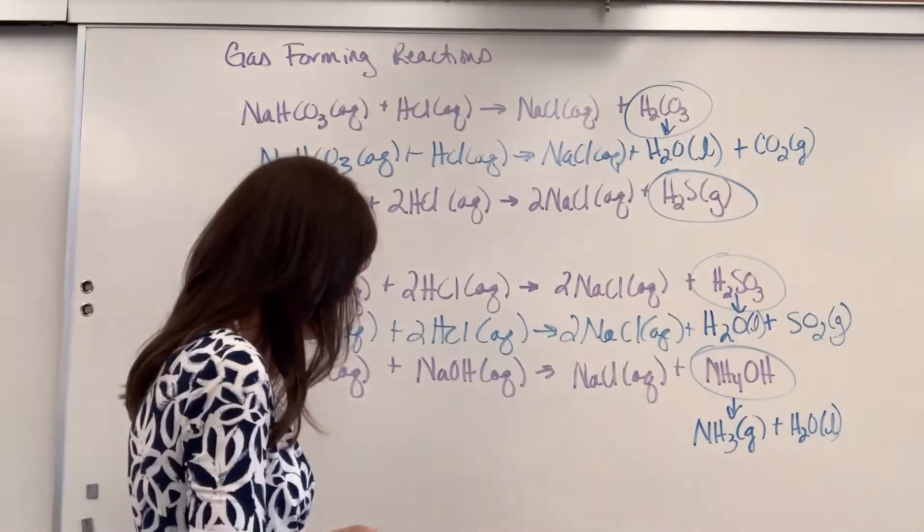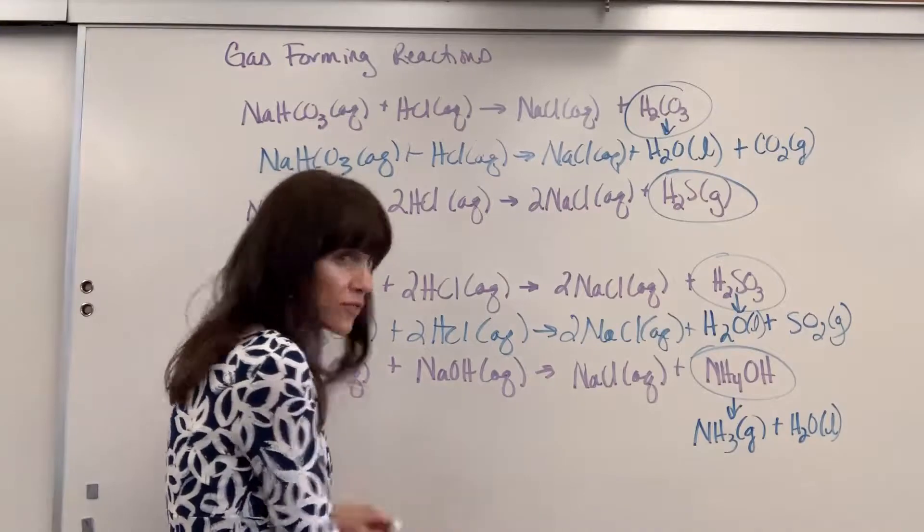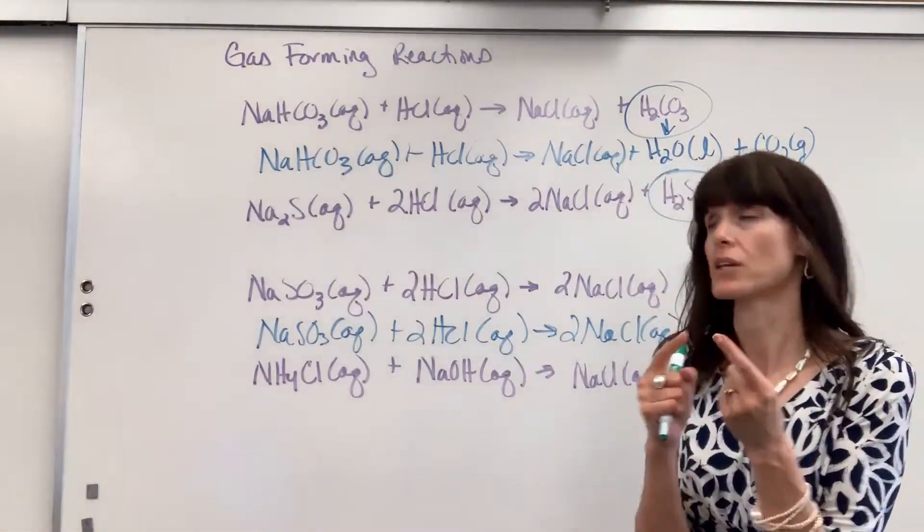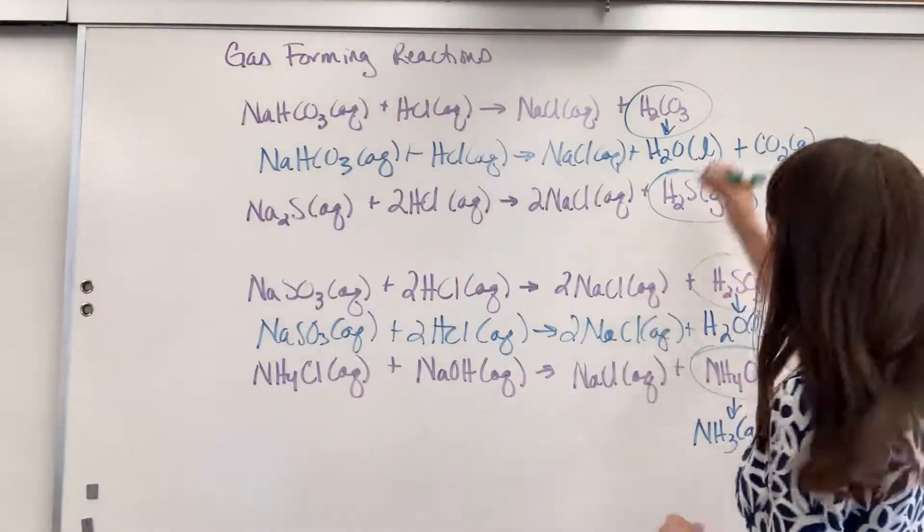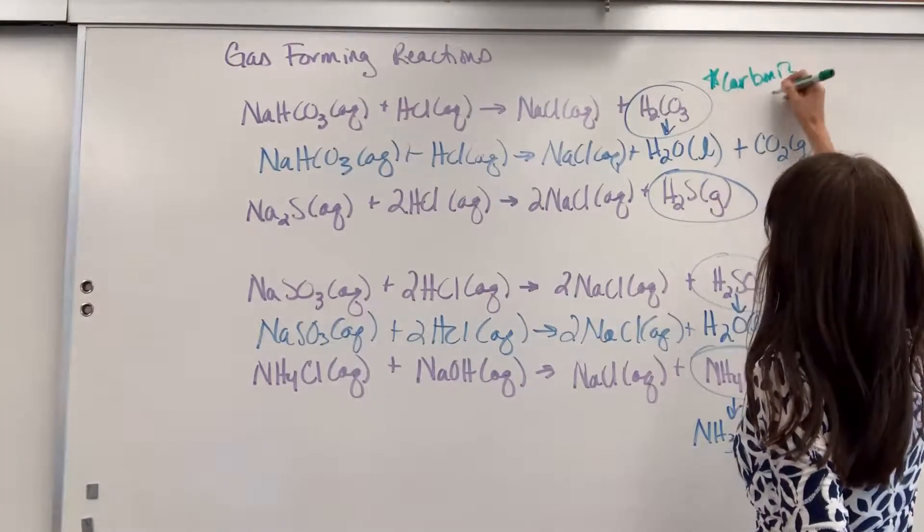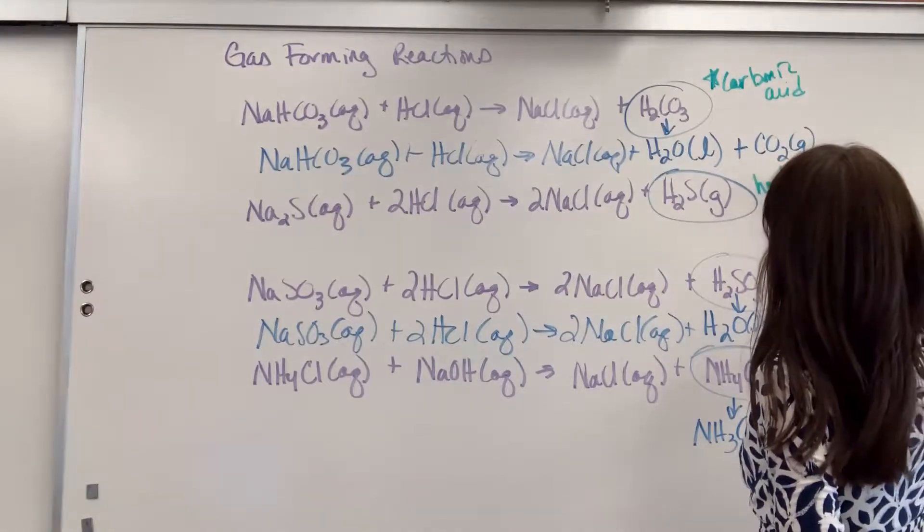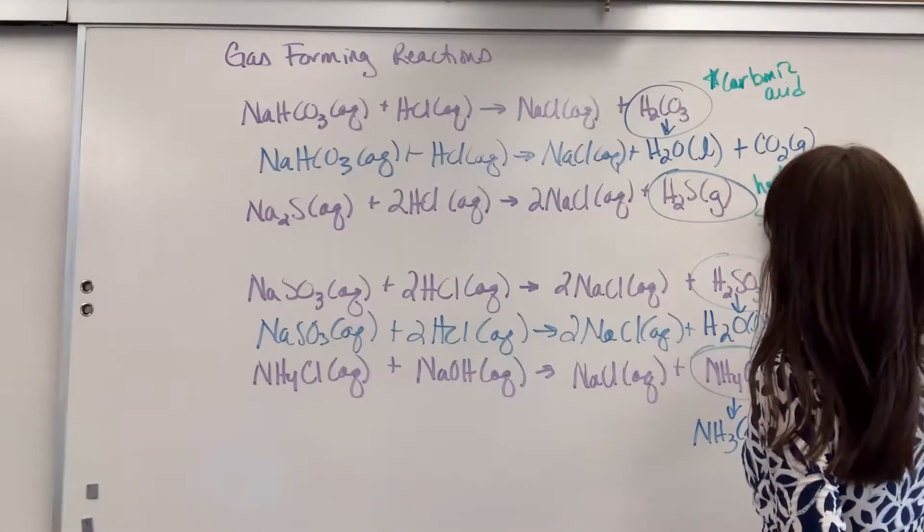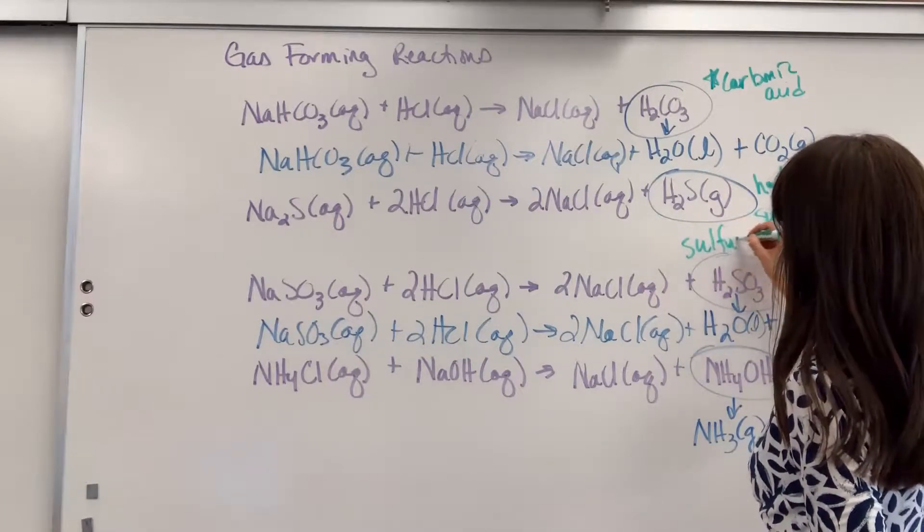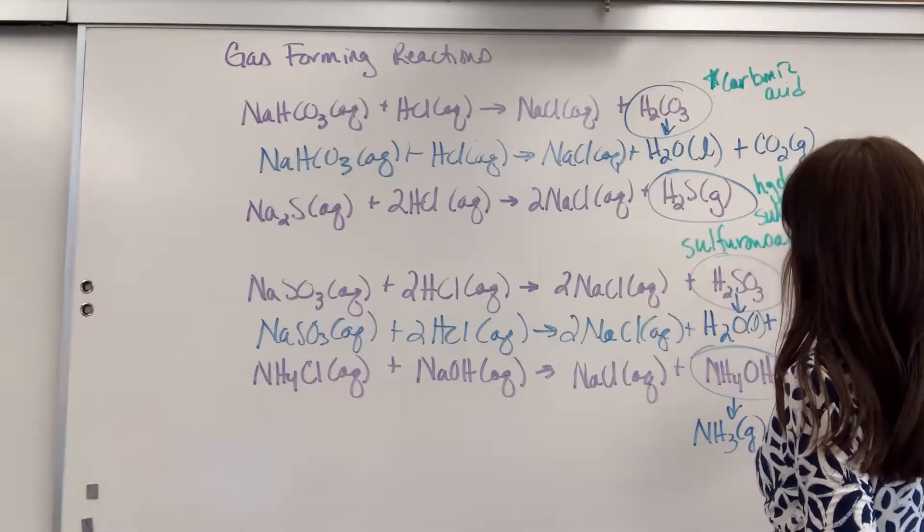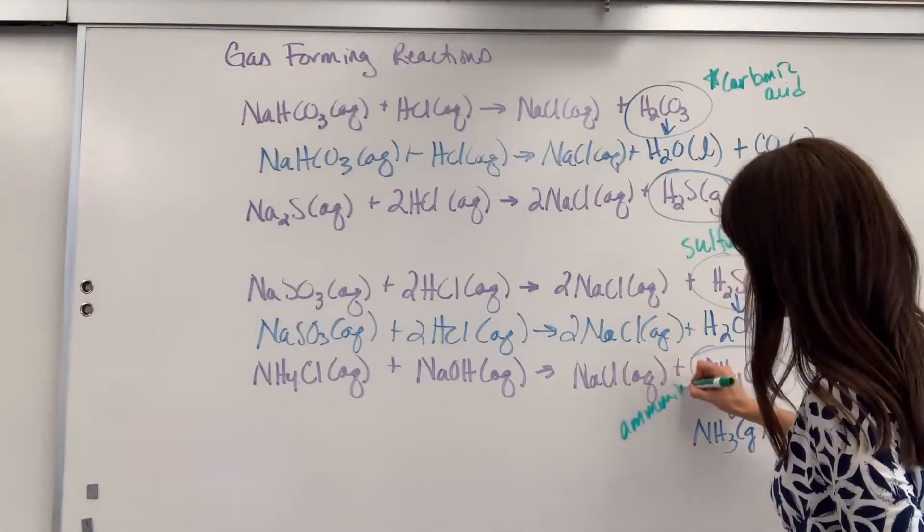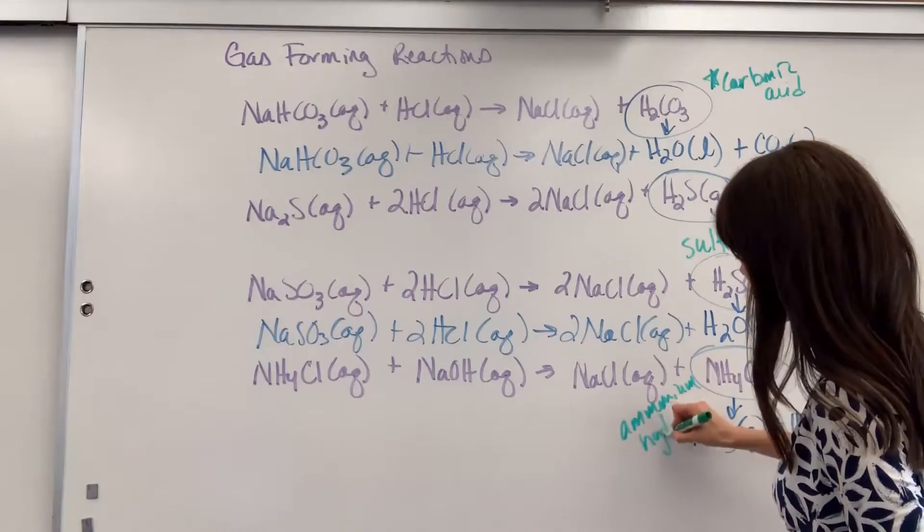So again, the four you've got to have memorized. When you do a double replacement reaction, if you see these products, carbonic acid, let me write that out, carbonic acid, if you see the hydrogen sulfide, if you have sulfurous acid, and then this last one, if you have ammonium hydroxide, those are your four.